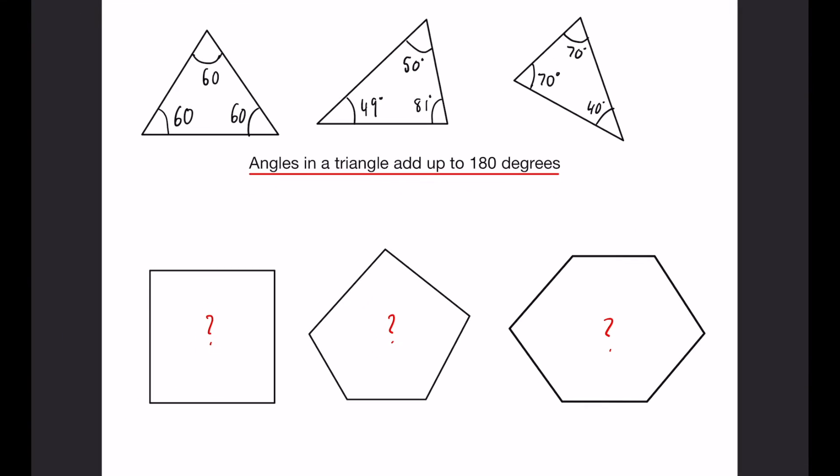Okay, finally we have angles within a polygon. So we know that angles within a triangle add up to 180 degrees. As you can see here, we have an equilateral triangle where all the angles are 60, we have a type of scalene triangle here, and we also have an upside down isosceles triangle there. So we know that angles in a triangle add up to 180 degrees.